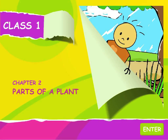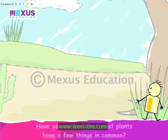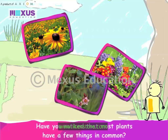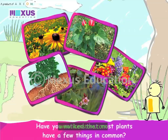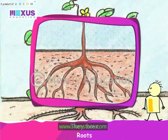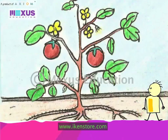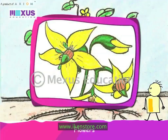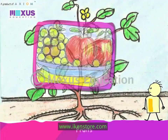Parts of a Plant. Have you noticed that most plants have a few things in common? They have roots, stems, leaves, flowers, and fruit.